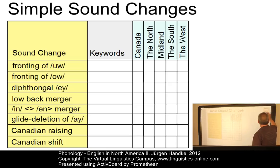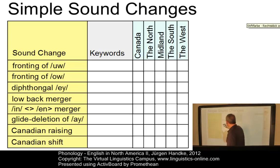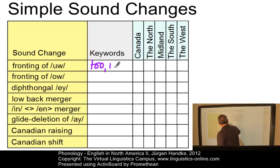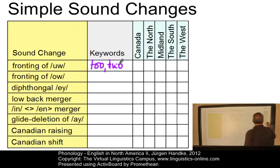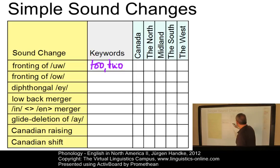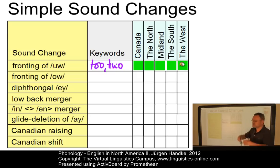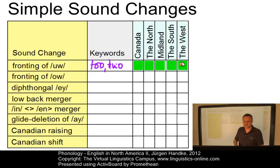The first sound change is the fronting of U, and it applies to keywords such as 'to.' It is a feature that applies to all varieties listed here, so it is a unifying feature across the entire North American continent. The result would be something like 'to' becomes fronted.